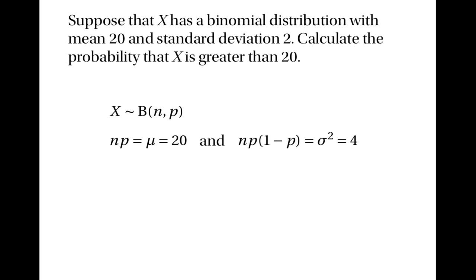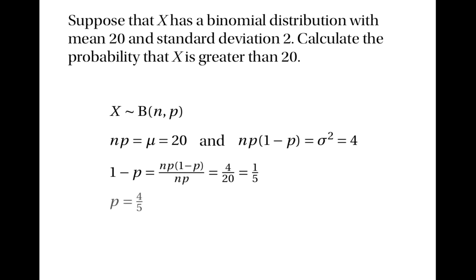From these two facts, we can use a trick to find what 1 minus p is. Notice that 1 minus p is np times 1 minus p divided by np. So 1 minus p is actually equal to the variance divided by the mean. In this case, that's 4 divided by 20. 4/20 is a fifth, so 1 minus p is equal to 1/5.